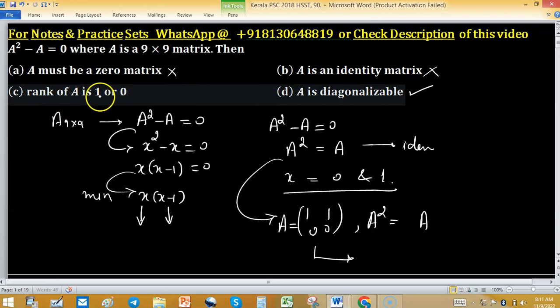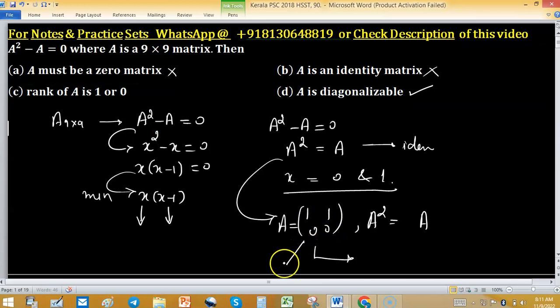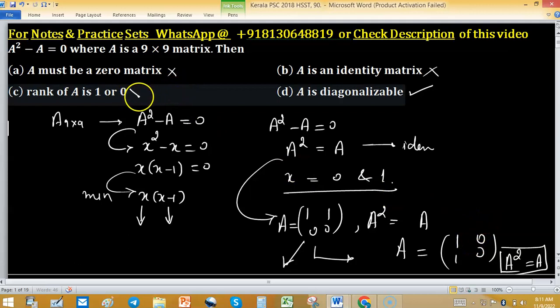Rank of A is either 1 or 0. You can consider rank of this matrix is 1, but if you consider another matrix like [1, 0; 0, 0], this is again matrix A by our consideration and satisfying A squared equals A. And rank of this matrix is 1, so rank may be 1 or 0. We are not sure about it. Option C has been discarded.